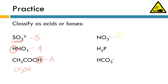NO3- — again, no protons to donate, so this must be a proton acceptor, making it a base. That is the nitrate ion. H3P — we can donate those hydrogens, that's why they're out in the front, making this an acid. And then we get to HCO3-. I see a proton, so that's going to be an acid. But wait — I also have a minus sign, which suggests that HCO3-, the hydrogen carbonate or bicarbonate ion, is capable of accepting a proton as well. That means it's also a base. So as long as you didn't leave this one blank, you at least got it half right. HCO3- can behave as both an acid and a base. You might be thinking we have a bipolar molecule — but that's not what we call them in chemistry.